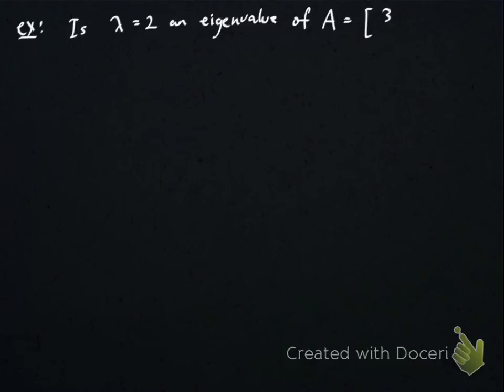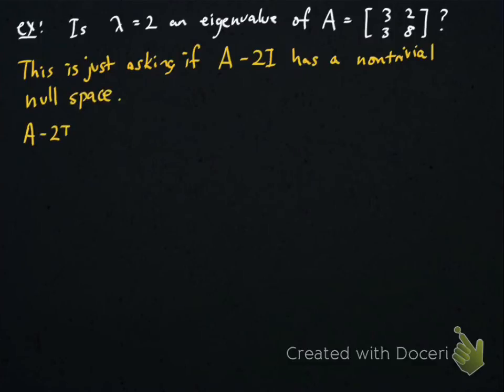So let's use this to check in some examples. What if I ask you is lambda equals 2 an eigenvalue of the matrix A equals [3, 2; 3, -8]?